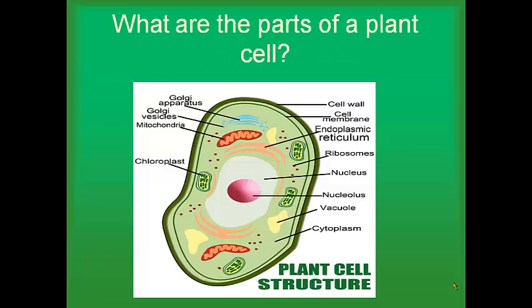This is a representation of a plant cell. I'm not going to talk about all the parts of a plant cell — we've covered that before in sixth grade — but I am going to talk about the parts that are most important to photosynthesis and the parts that are most important as far as the Cambridge exam goes.